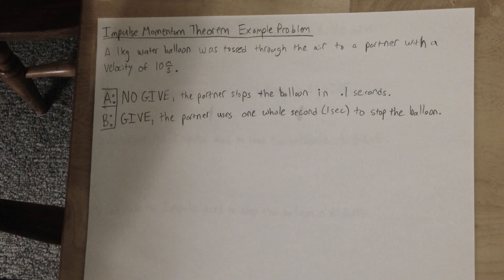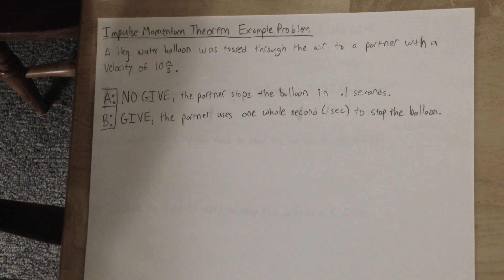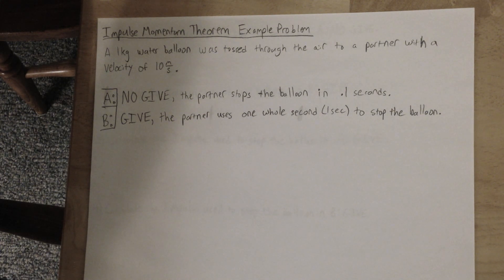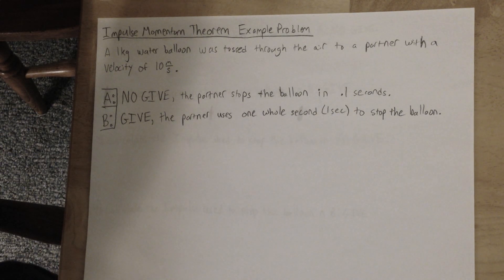Here's your impulse-momentum theorem example problem. I'll do some calculations with the impulse-momentum theorem. A one-kilogram water balloon was tossed through the air to a partner with a velocity of 10 meters per second.